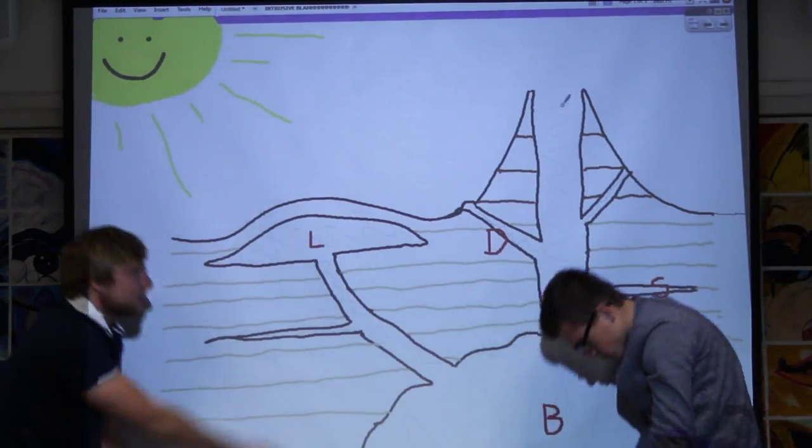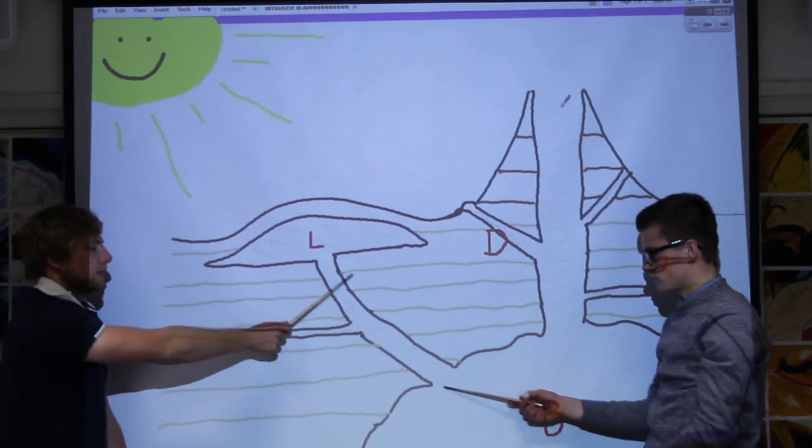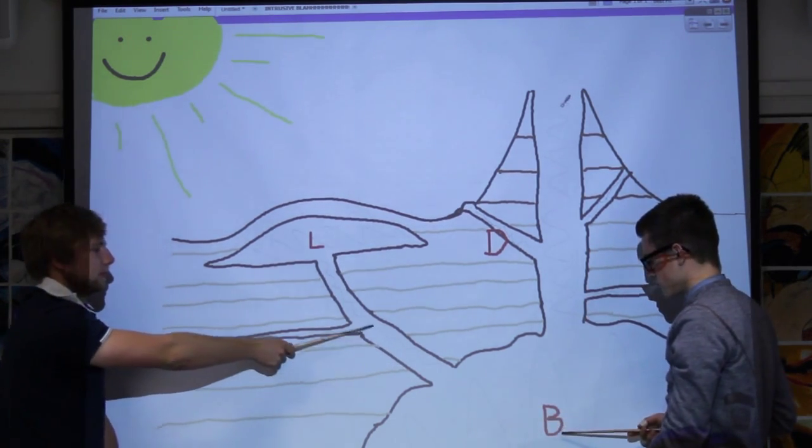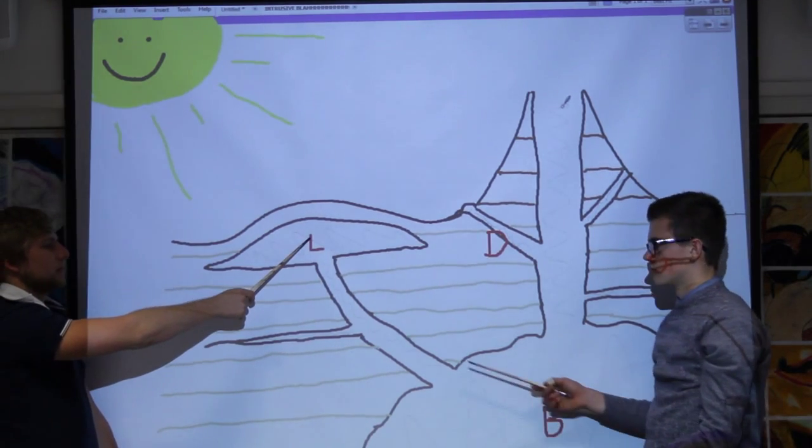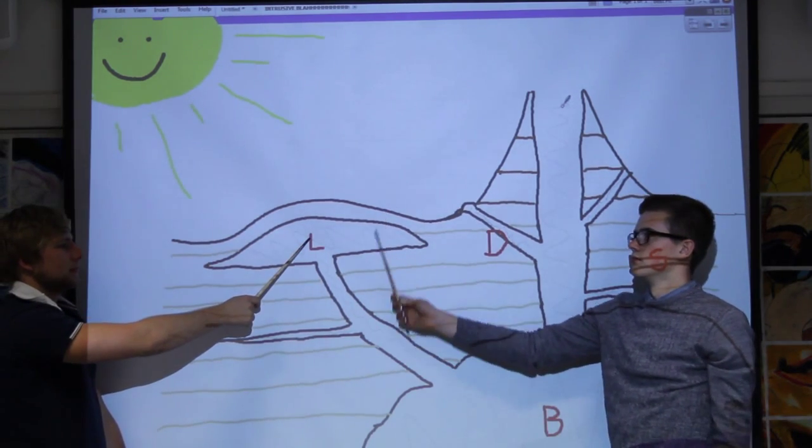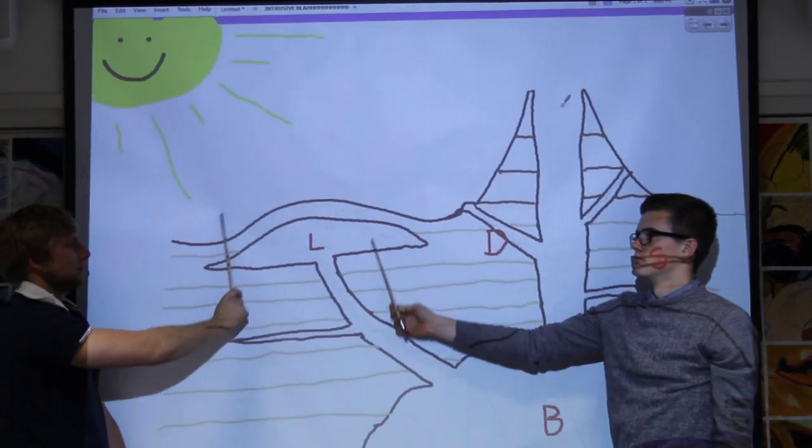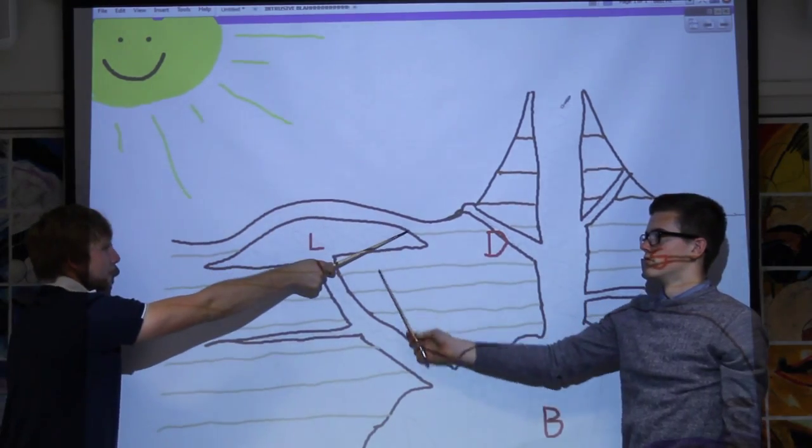Laccoliths are formed when viscous magma moves up a dyke but is too thick to penetrate the surface. This creates a bulge in the surrounding landscape.